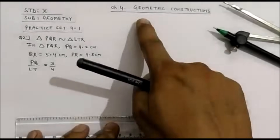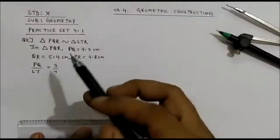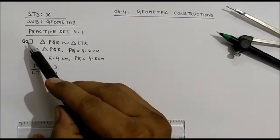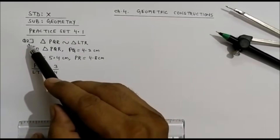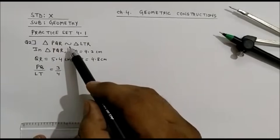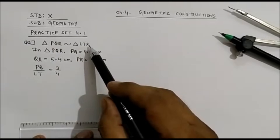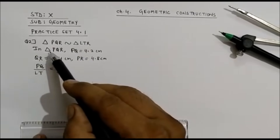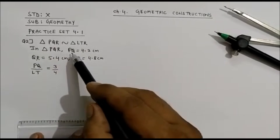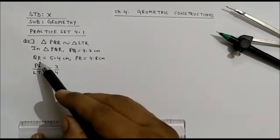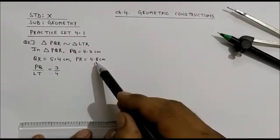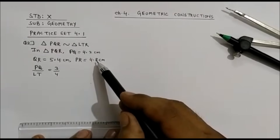In the topic Geometric Construction practice at 4.1, today we will see how to solve question number 2 — how to construct triangle PQR similar to triangle LTR. Measurements of triangle PQR are given: PQ 4.2 cm, QR 5.4 cm.